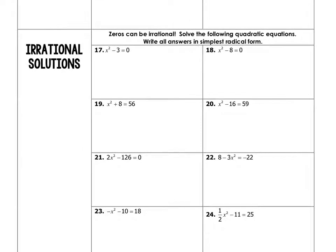So zeros or roots or x-intercepts can be irrational. What that means is irrational numbers are numbers like the square root of 5, which comes out to be a decimal that goes on forever, or square root of 17, or square root of 18. Basically, irrational numbers are square roots of non-perfects.